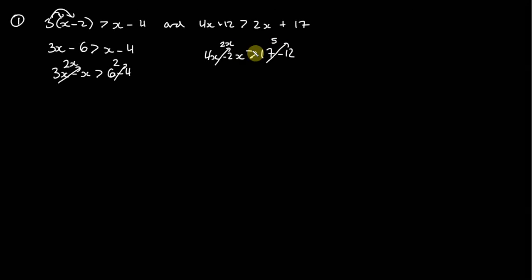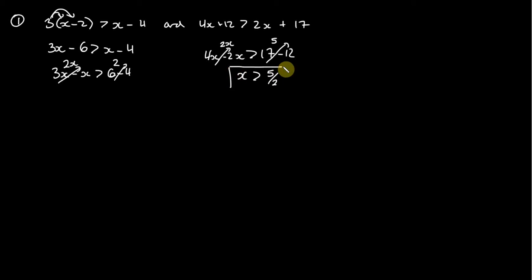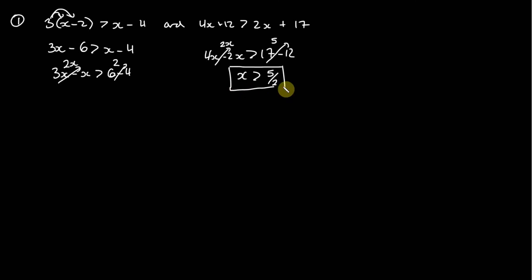Now we divide by 2 on both sides. On the right we get x is greater than 5 halves, which is the same as 2 and a half. On the left, 2x is greater than 2, so dividing by 2 gives x is greater than 1.